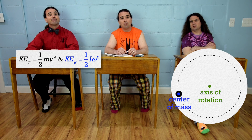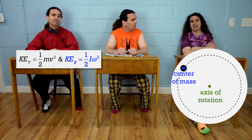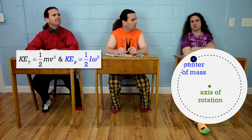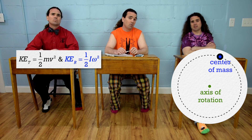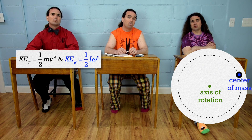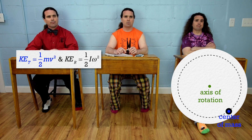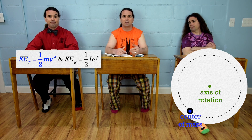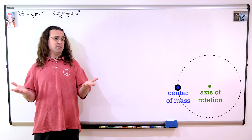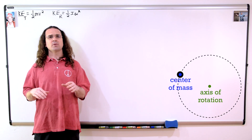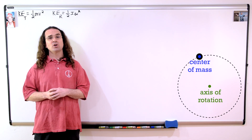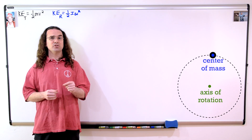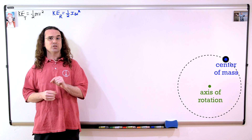Actually, the center of mass of the point particle is not staying in one constant location, so it's moving translationally. We should use the translational kinetic energy equation. I know you are both wrong because you're always wrong, but I don't know why. Okay, I like your arguments. However, let's take a closer look at the rotational kinetic energy equation.